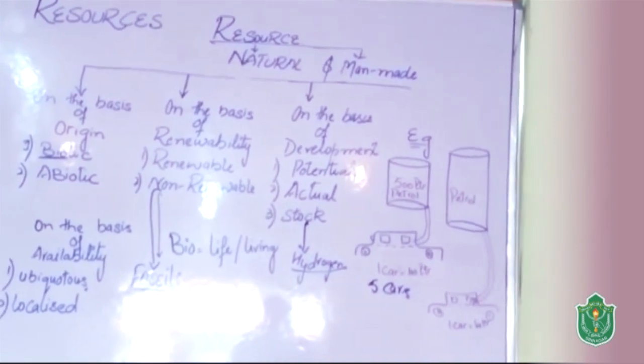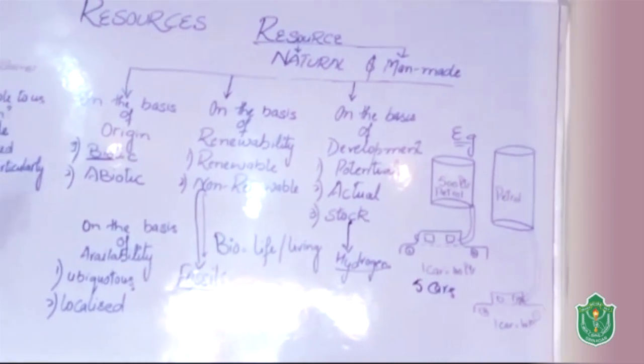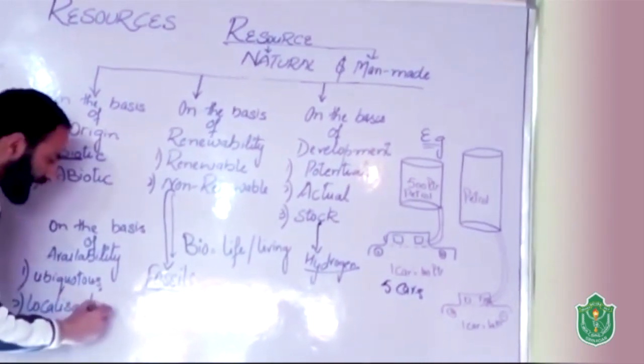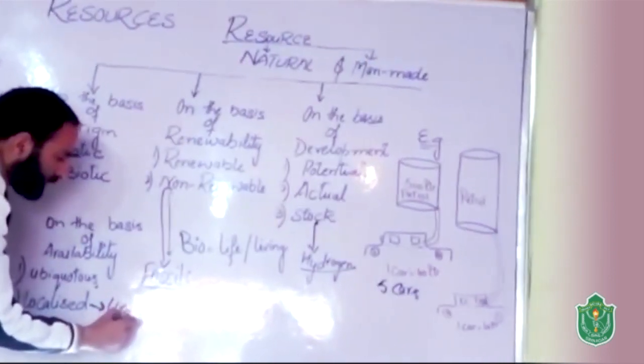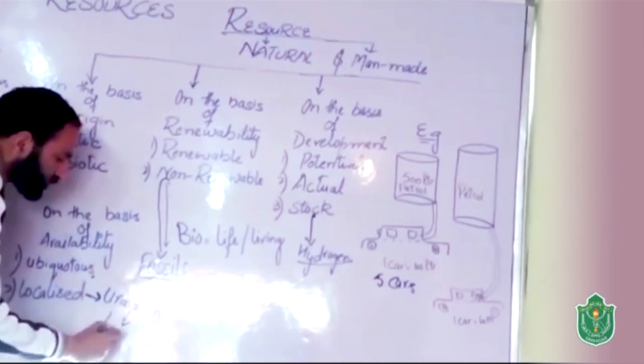Localized resources are those resources which are found at a particular place. For example, I will go to an example - uranium. Uranium is a localized resource of India.